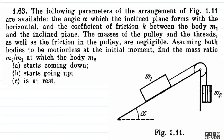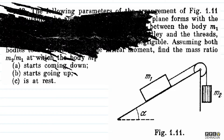The question says the following parameters of the arrangement of figure 1.11 are available: the angle alpha which the inclined plane forms with the horizontal, and the coefficient of friction K between body M1 and the inclined plane. The masses of the pulley and threads as well as friction in the pulley are negligible. Assuming both bodies to be motionless at the initial moment, find the mass ratio M2 upon M1 at which: first, M2 starts coming down; second, starts going up; and third, is at rest.